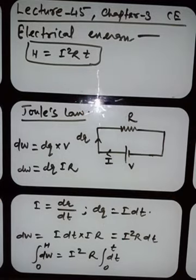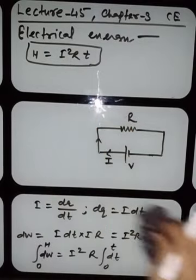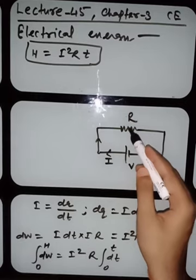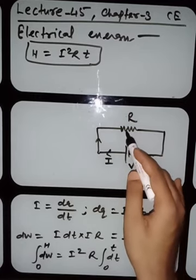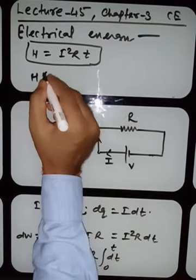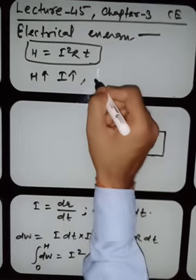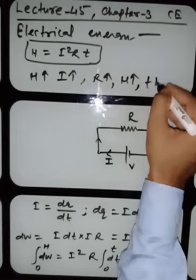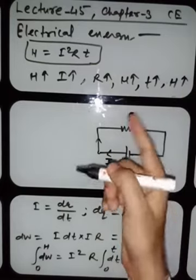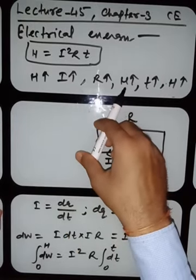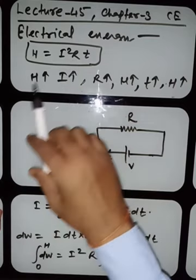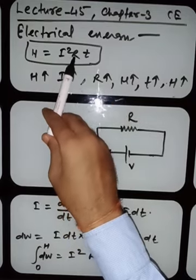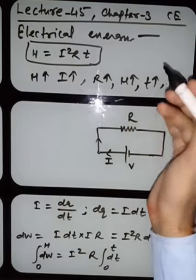What was Joule's law? Joule experimentally found that the heat radiated by a resistor depends on three things: the current, the resistance, and the time. Heat depends on current as the square, and linearly on resistance and time. According to Joule, the heat radiated by any resistor is directly proportional to the square of the current, the resistance, and the time for which the current flows. This is Joule's law.